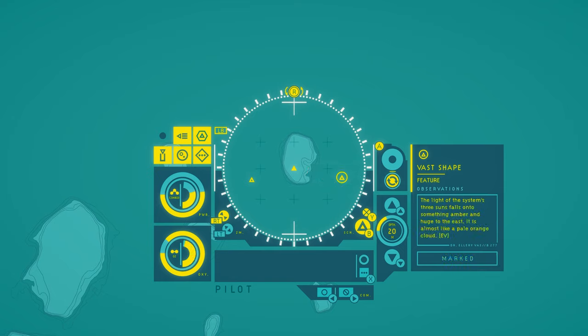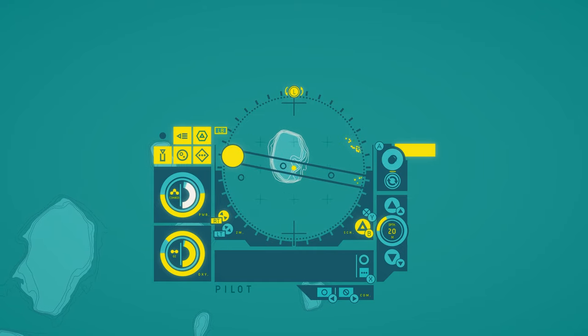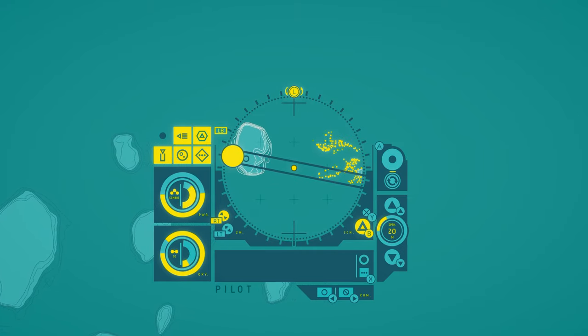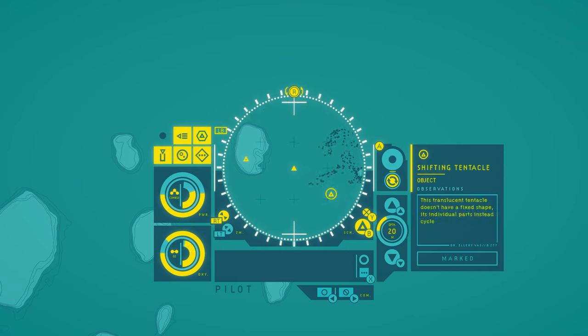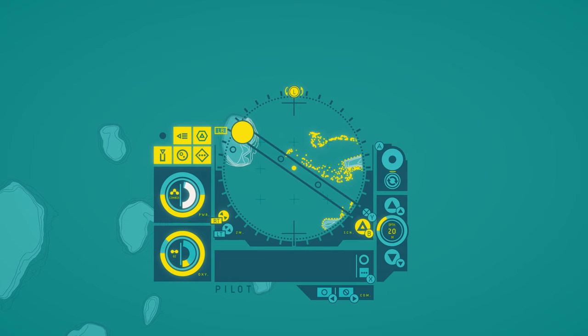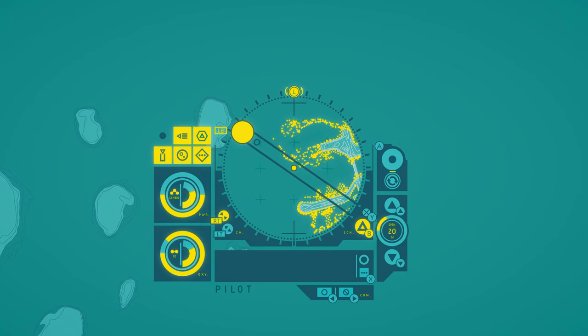Vast shape. The light of the system's three suns falls onto something amber and huge to the east. It's almost like a pale orange cloud. What is that? Shifting tentacle. This translucent tentacle doesn't have a fixed shape. Its individual parts instead cycle through developmental phases as they cohere. What? Cycle through developmental phases as they cohere. What is this?